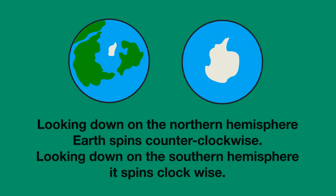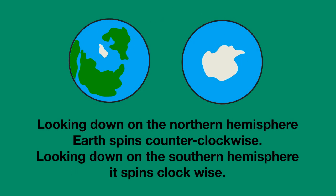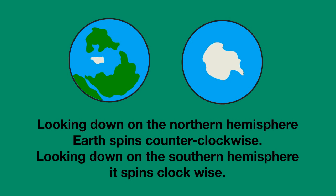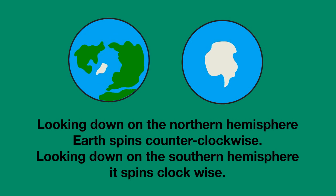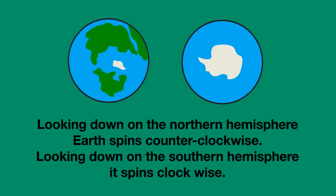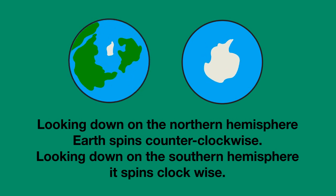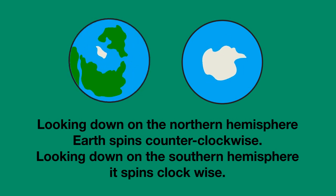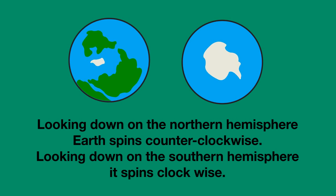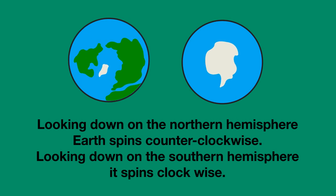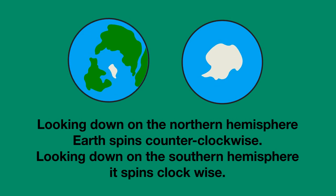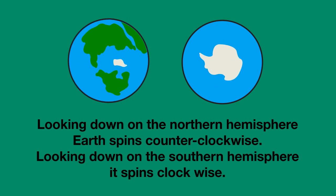So, looking down on the Northern Hemisphere, Earth spins counterclockwise. And looking down on the Southern Hemisphere, it spins clockwise.